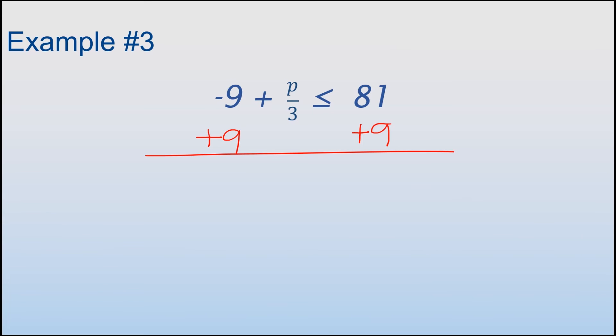So this time I have a less than or equal to sign, but it would be fine if it were just the less than sign, just like before. Okay, so I get rid of this, and I'm left with p/3 ≤ 90.